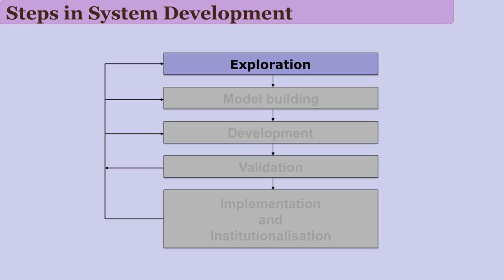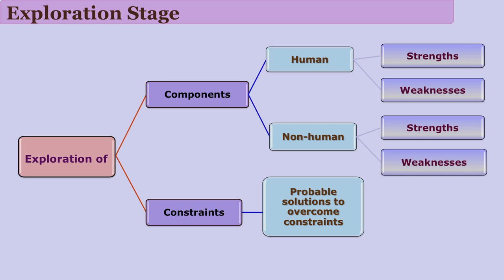The first stage is exploration. What do we explore? We said that systems have components and constraints. Components may be human as well as non-human. Constraints are possible hindrances which may affect the functioning of the system. A good system designer always first thinks of constraints so that he or she is ready to face them.